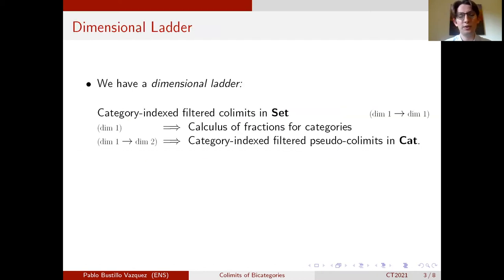So the idea of the paper is to notice that there is some sort of dimensional ladder that we can slowly climb up in order to build our results in higher dimension. So what Gabriel and Zisman says is that if you can compute filtered colimits of sets, then you can compute the calculus of fraction of categories.